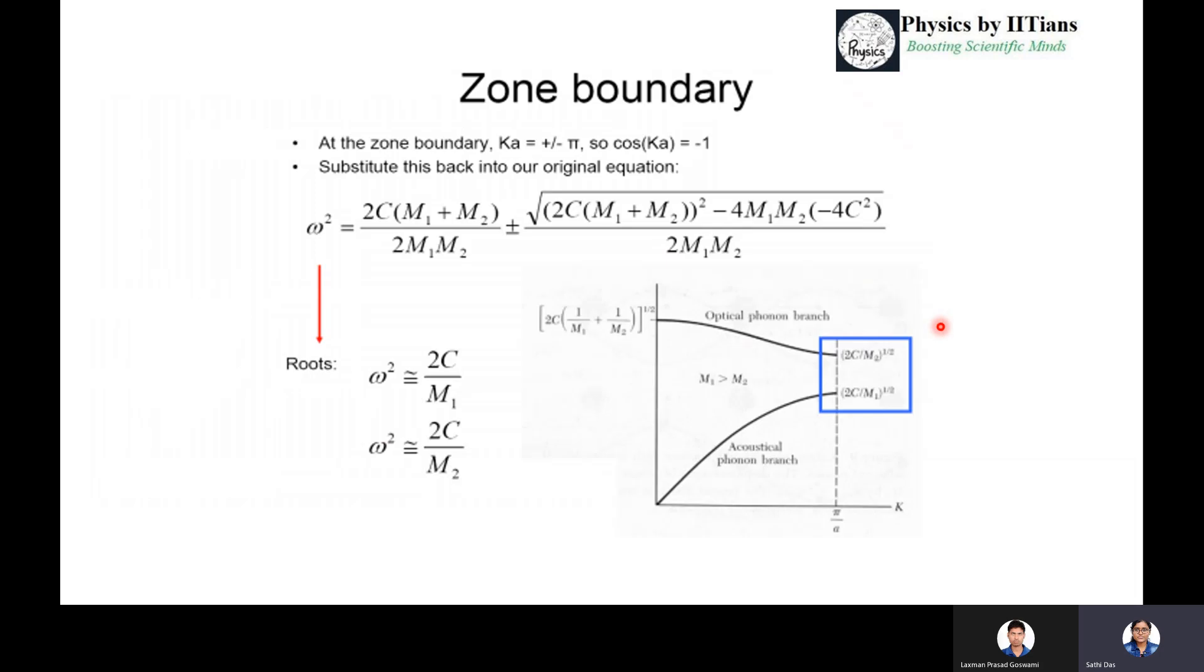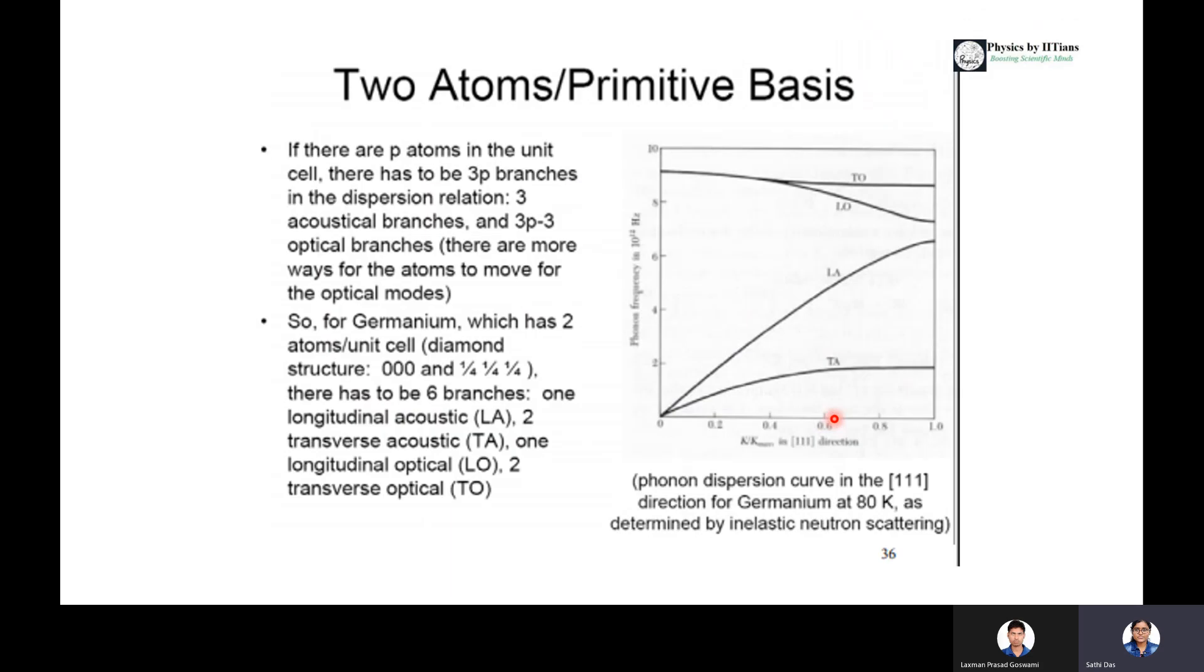What happens at the zone boundary? At the zone boundary means plus minus π, so cos(ka) will be minus 1. Substitute this to the original equation of ω versus k or ω² versus k, then we will find ω² nearly equals 2C/M1 and another will be ω² nearly equals 2C/M2. For the optical branch it will give √(2C/M2) and for the acoustical branch it will give √(2C/M1).